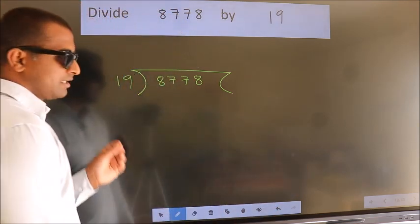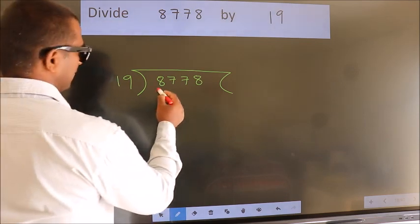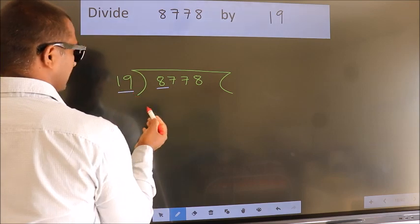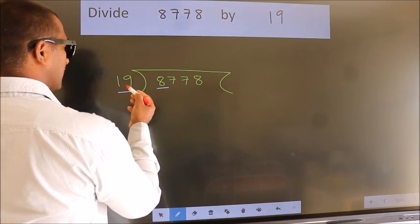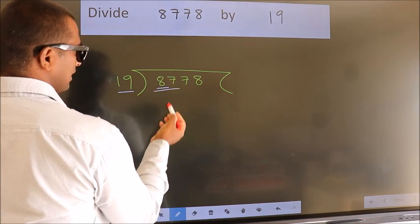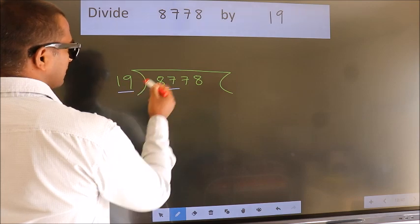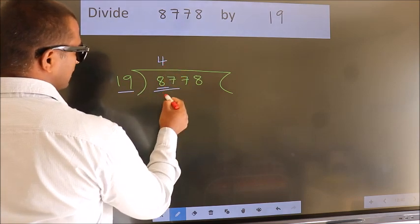This is your step 1. Next, here we have 8 here, 19. 8 is smaller than 19, so we should take two numbers: 87. A number close to 87 in the 19 table is 19 fours, 76.